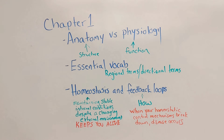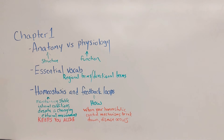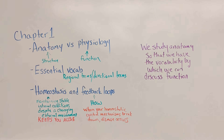When homeostatic control mechanisms break down, disease is going to occur. That's why we study this — how do you understand why something is broken if you don't know how it functions normally? Anatomy is the study of structure, the names of things. Physiology is the study of function. We study anatomy so that we have the vocabulary by which we can discuss function.